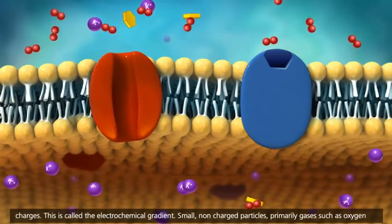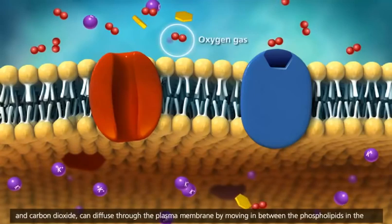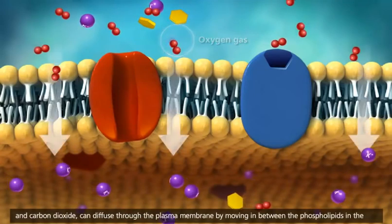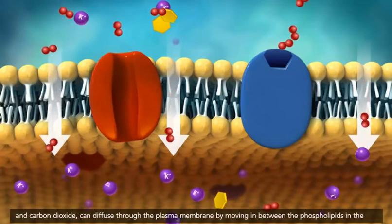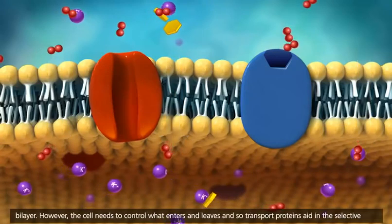Small, non-charged particles, primarily gases such as oxygen and carbon dioxide, can diffuse through the plasma membrane by moving in between the phospholipids in the bilayer.